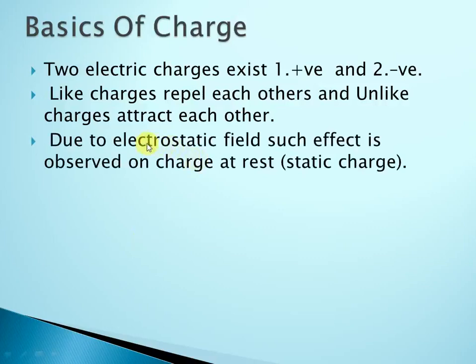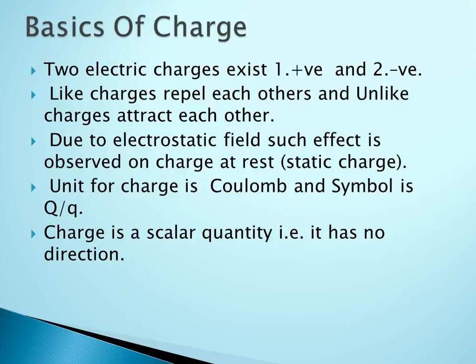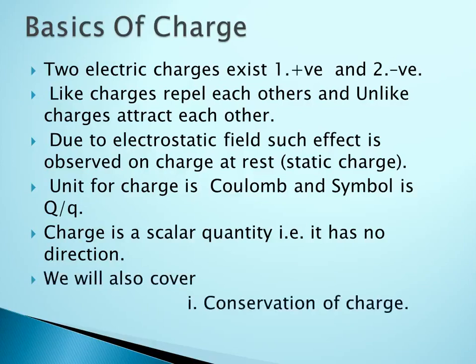The dictionary meaning of electrostatic: 'static' means at rest — that is charge at rest. So the electric field operating on a charge which is at rest or which is static. The unit of charge is coulomb and its symbol is capital Q or small q. Charge is a scalar quantity — that is, it has no direction. Also, there are properties like conservation and quantization.